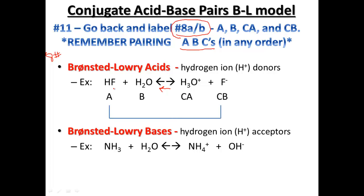Notice that HF and F- are the same chemical, just with a different hydrogen — either given or taken away. And H2O and H3O+ are the same chemical, except for the donation or removal of that hydrogen ion. So our pairing: hydrogen fluoride is our acid, the fluoride ion has become our conjugate base. H2O is our base — it receives the hydrogen ion. When it becomes H3O+, it becomes the conjugate acid; it can donate that hydrogen back to return to water in the reversible reaction.